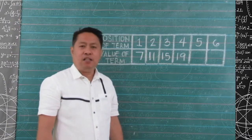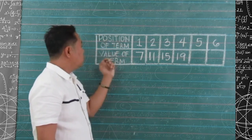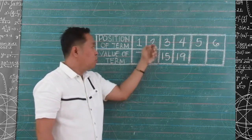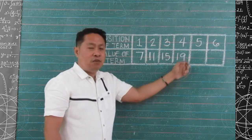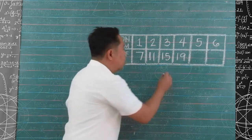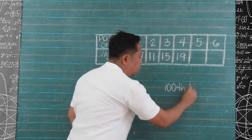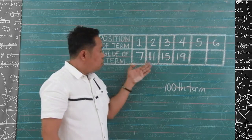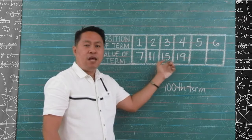Now, let's try another one using this table. We have the position of term and the value of term. 7 is our first term, 11 is the second term, 15 is the third term, and 19 is the fourth term. But how about the 5th, 6th terms, and the 100th term? What do you think is the pattern used in the sequence 7, 11, 15, and 19?